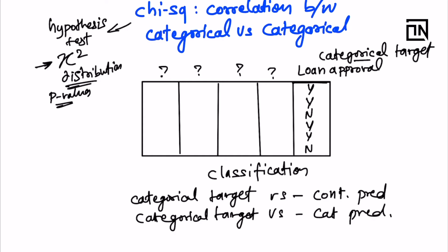In the first setting, when you have a categorical target and continuous predictor, as I discussed in the previous video, we use ANOVA. And in the scenario where the categorical target is to be correlated with a categorical predictor, then we use chi-square.